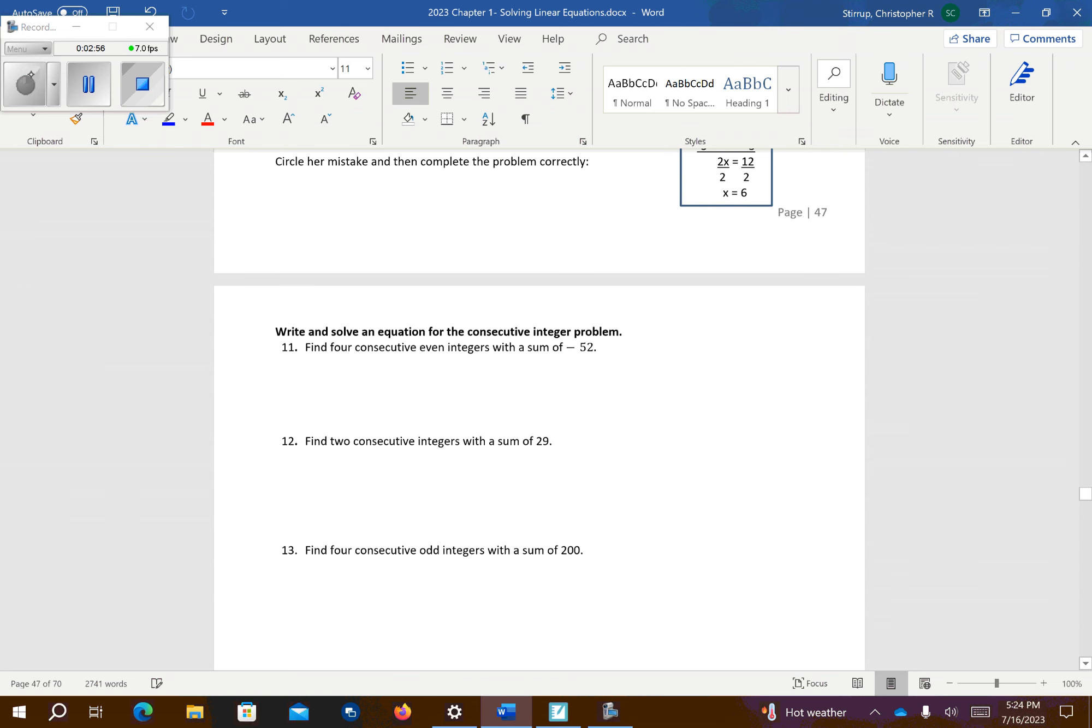Number 11. Find 4 consecutive even integers with a sum of negative 52. So even, that's 2, 4, 6, 8. But remember, even also could be negative 2, negative 4, negative 6, negative 8, like that. So 4 consecutive even. So x, and then the next number would be x plus 2. The next number after that would be x plus 4. The number after that would be x plus 6 equals negative 52.